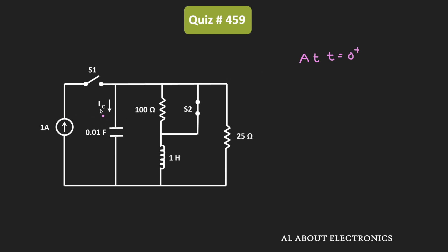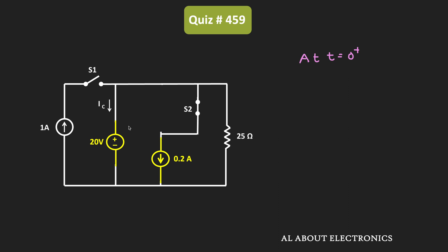At time t equals 0+, the circuit looks as follows: S1 is opened and S2 is closed. The capacitor acts as a voltage source of 20 volts, and the inductor acts as a current source of 0.2 ampere. Since S2 is closed, the 100 ohm resistor gets short circuited, and the current source also gets disconnected from the circuit. This is how the circuit looks at t equals 0+.